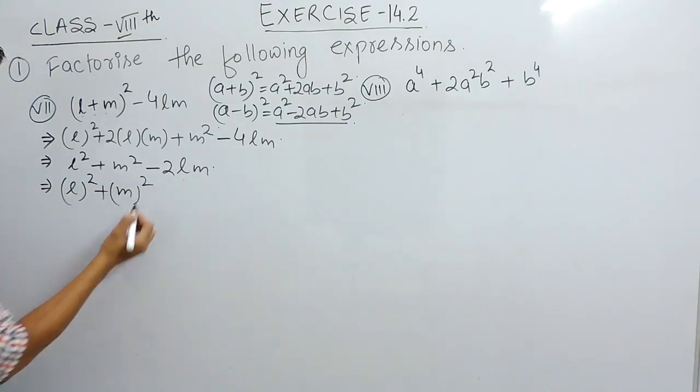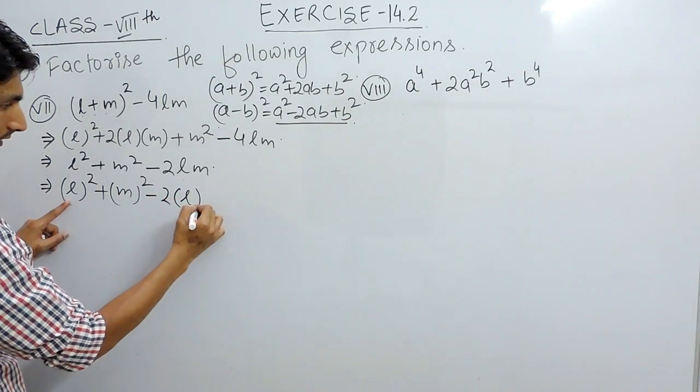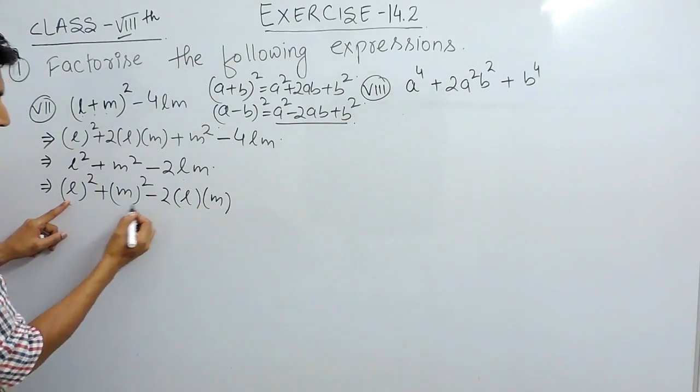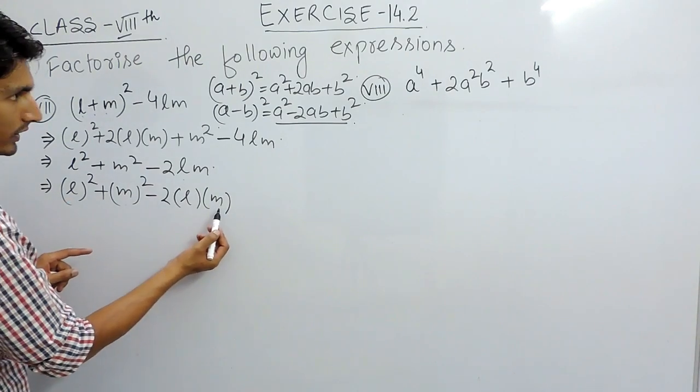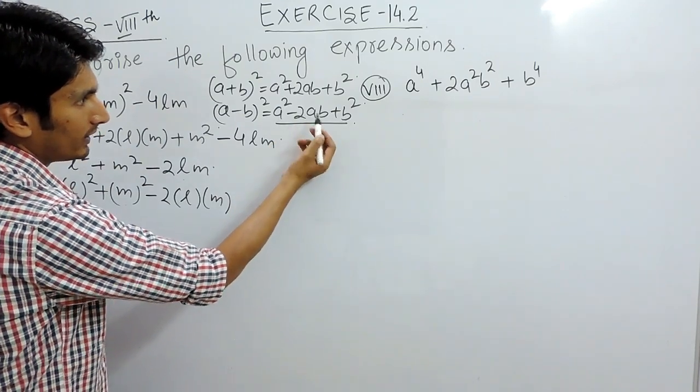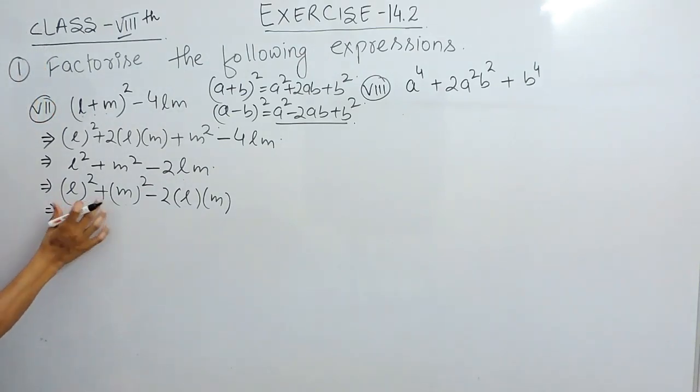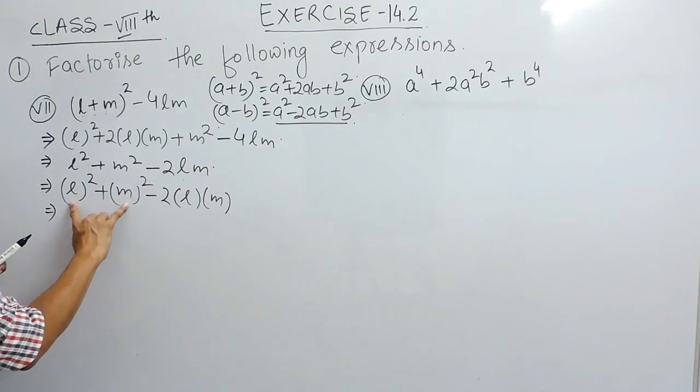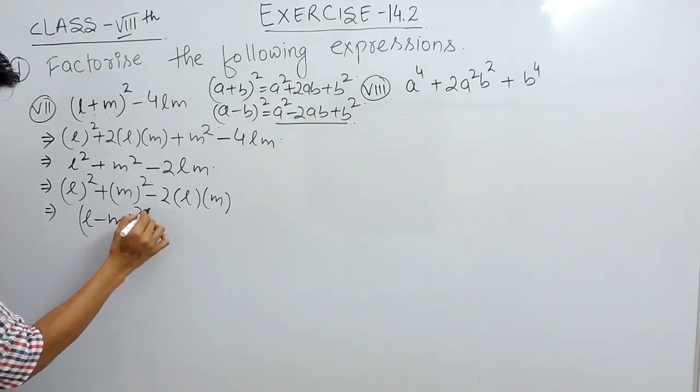Our a square is l square. Our b square is m square and minus 2a into b which are l and m. So this is a square plus b square minus 2ab. When the terms are shifted, there is no difference. So the expression will remain same. Now, we know that a square plus b square minus 2ab is basically equals to a minus b whole square.